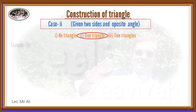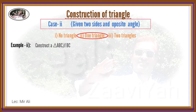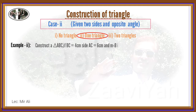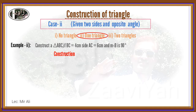Second example: Construct a triangle ABC if BC is equal to 4 centimeters, side AC is equal to 6 centimeters, and angle B is equal to 90 degrees. Step 1: Draw line segment BC of length 4 centimeters.